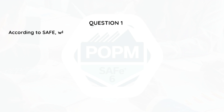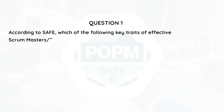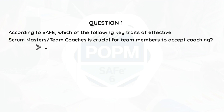Question 1. According to SAFe, which of the following key traits of effective Scrum Master team coaches is crucial for team members to accept coaching? Empathy, Fairness, Optimism, or Agreeableness?